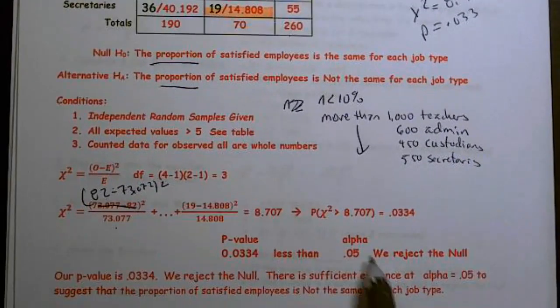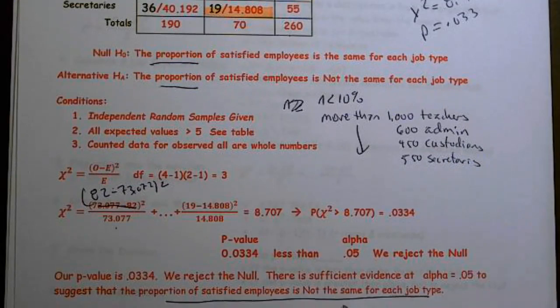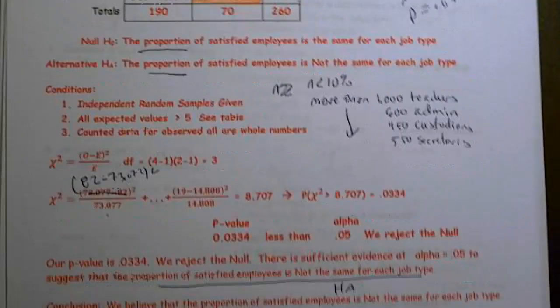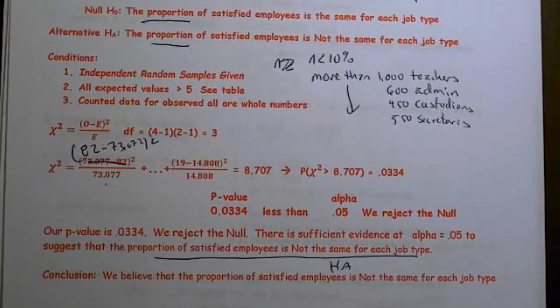Our p-value is less than alpha, so we reject the null. There is sufficient evidence at alpha equal 0.05 to suggest that the proportion of satisfied employees is not the same for each job type. Please make sure that we're always referring back to the alternative - the last part. We believe that the proportion of satisfied employees is not the same for each job type. Thank you for watching. I will do another one in the next video. See you on the next one.